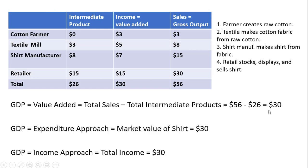You'll notice this GDP of $30 equals the expenditure approach. The expenditure approach calculates the final market value for all goods and services — here the shirt sells for $30, and that is the expenditure approach. In terms of the income approach, we sum up the total income generated in the production process, and that also sums to $30.